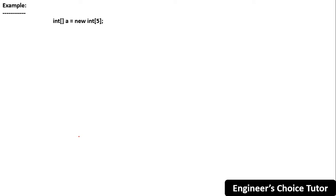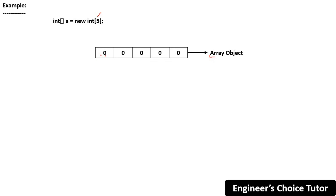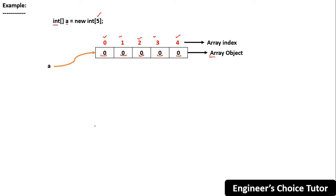For example, I have created one array whose size is five. This is an array object, and it gets initialized with the default value of int, which is zero, because this is an int type of array. The reference variable 'a' is pointing to this array object. Since arrays are index-based, the indices are zero, one, two, three, and four.